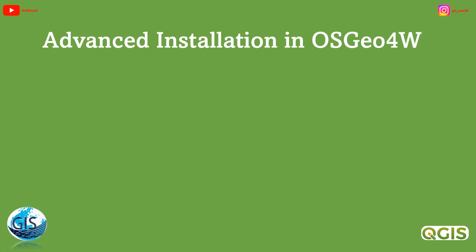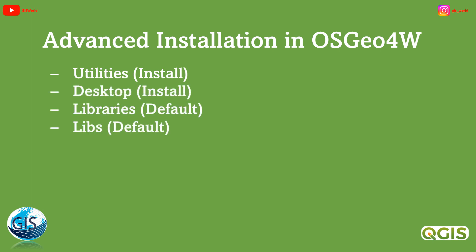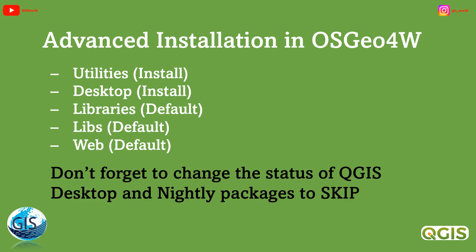Now it's time to talk about advanced installations. When you open this part, you will come across five sections: Utilities, Desktop, Libraries, Libs, and Web. For the first time, just change the default values of Utilities and Desktop to install. Please don't forget to change all the status of QGIS Desktop and Nightly Packages to skip, because I want to install the QGIS LTR version and I don't need the simple QGIS Desktop or the latest version. Also, we have some Nightly Packages — these are newer than the QGIS Desktop. Please don't install all of them on your PC, because it adds a lot of software and will definitely reduce the performance of your computer.